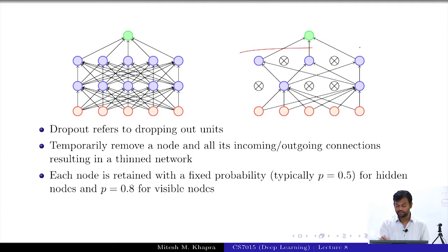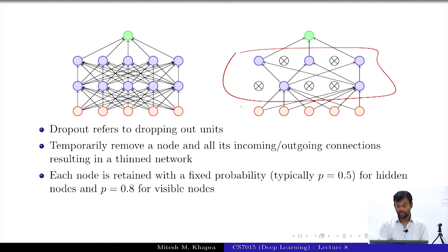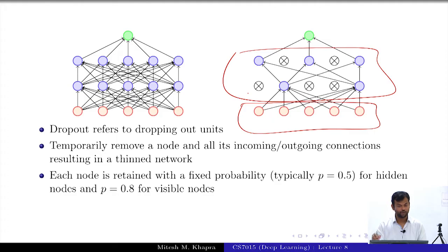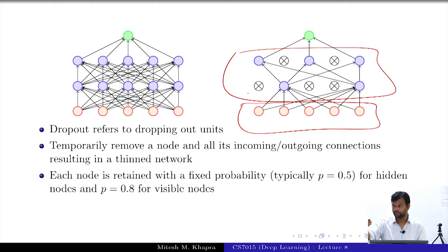For hidden units you drop them with probability 50% and input units with probability 20%. Dropping nodes from the hidden or input layer is the same as corrupting the input data — it is the same as adding noise to the input data.